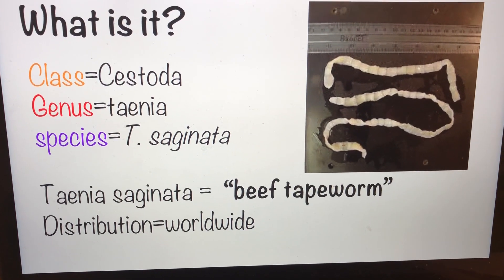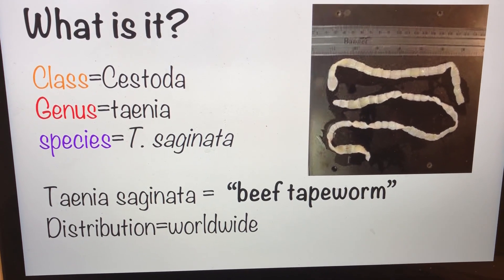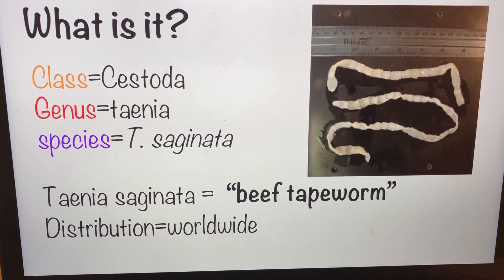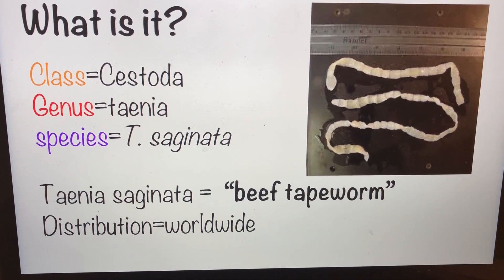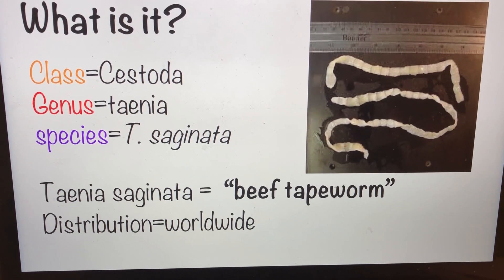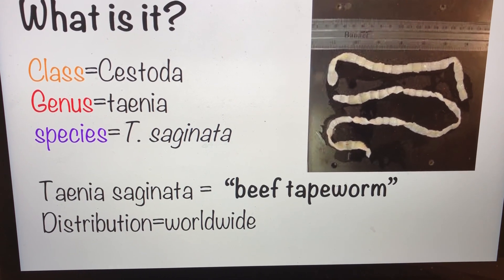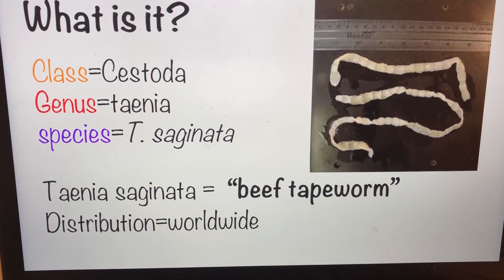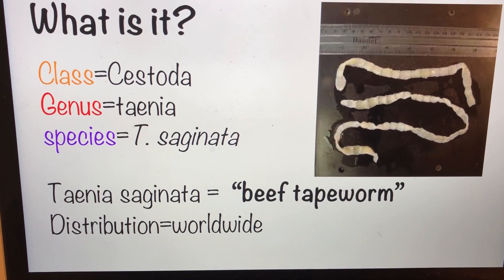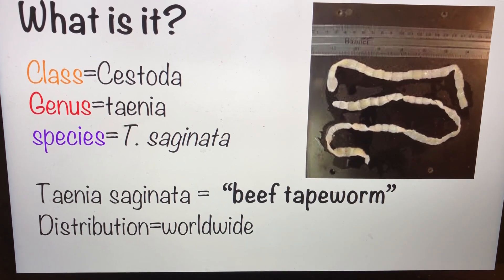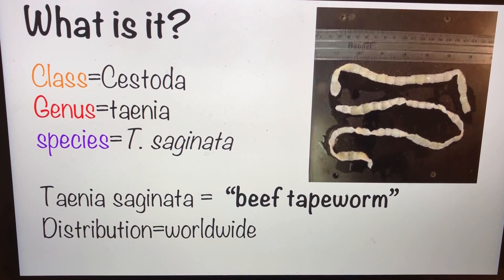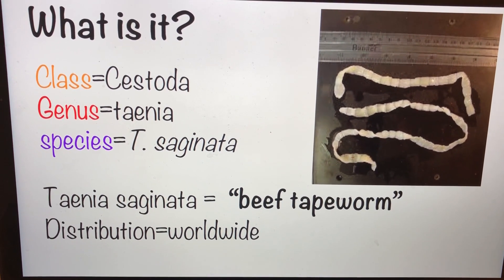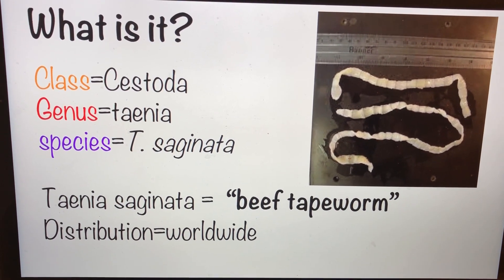So many of you may be wondering what is it? It's a parasitic tapeworm that comes from the class Cestoda, genus Taenia, and species T. saginata — T standing for Taenia. Taenia saginata is also known as the beef tapeworm, and its distribution is worldwide.